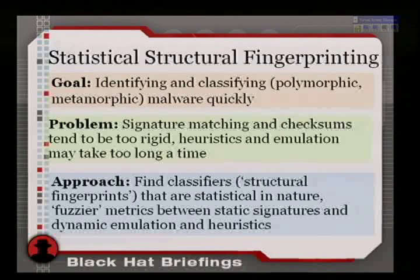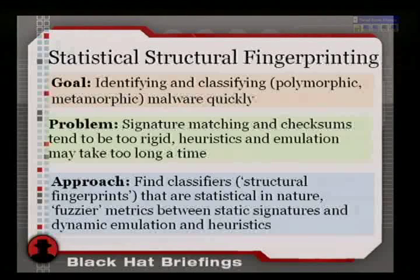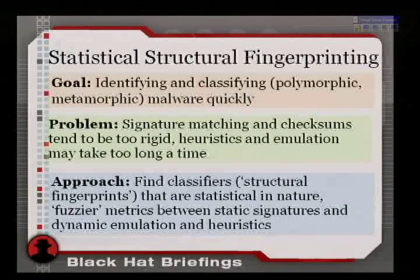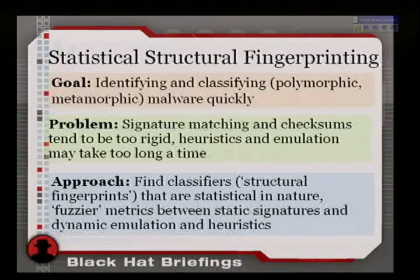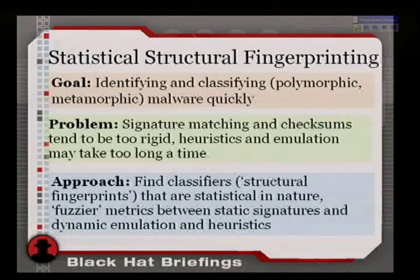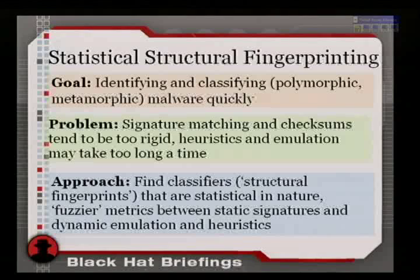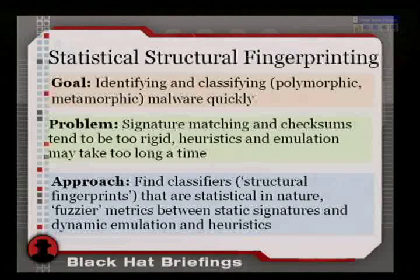In Germany, we call it the Denkanstoß, which means there's something to think about. Mainly using statistics, which is a form of aggregation of data — some would even say a form of compression — that is a little bit more resilient to common obfuscation techniques, so that we can with reasonable accuracy and visible speed quickly identify and classify malware.